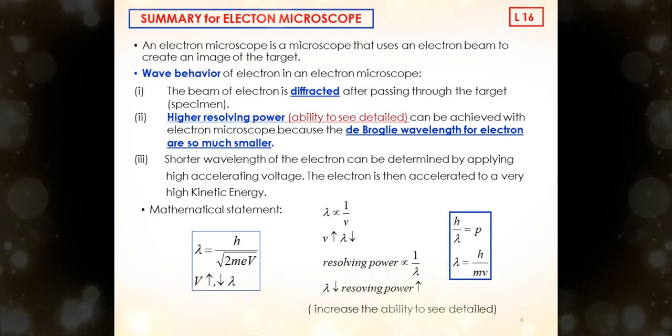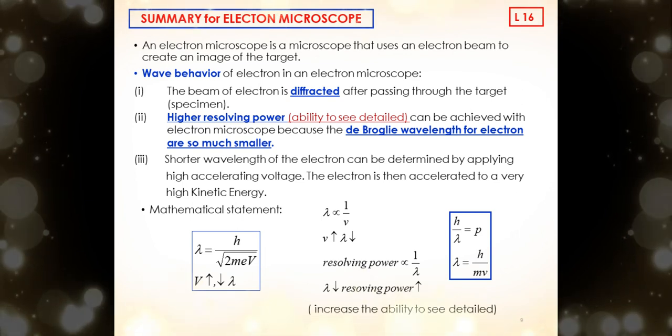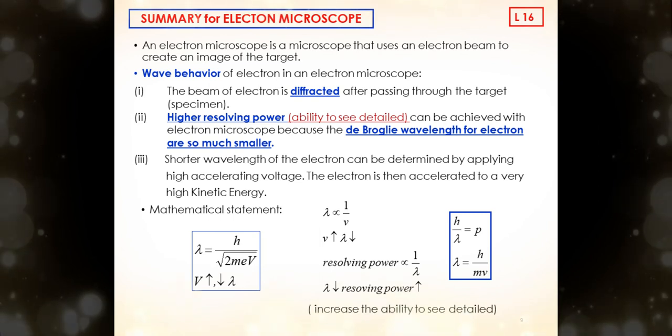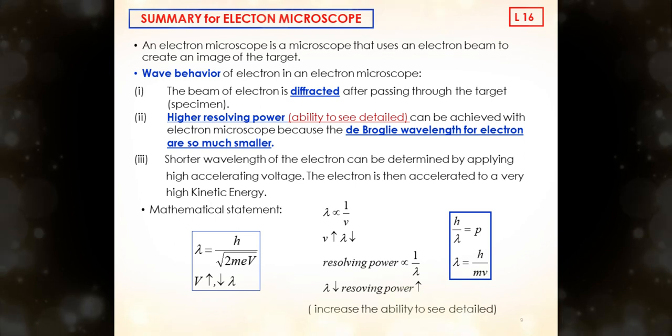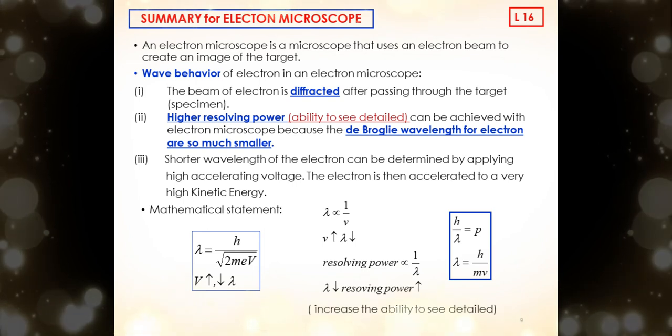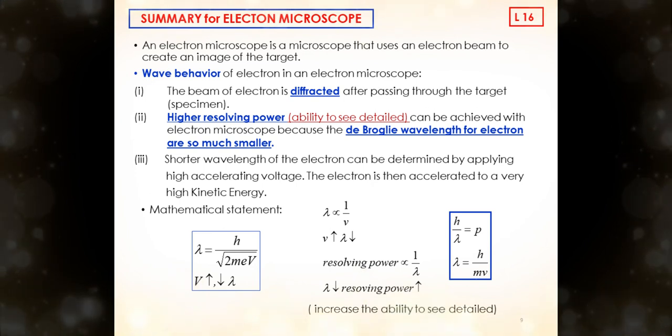As conclusion, an electron microscope is a microscope that uses an electron beam to create an image of the target. The wave behavior of electron in an electron microscope are: first, the beam of electron is diffracted after passing through the target or specimen. Second, the higher resolving power is the ability to see detail which can be achieved with electron microscope because the de Broglie wavelength for electron is so much smaller. Finally, the shorter wavelength of the electron can be determined by applying high accelerating voltage. The electron is then accelerated to a very high kinetic energy.